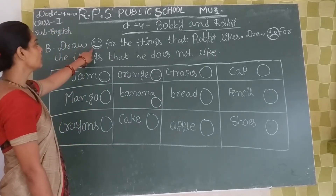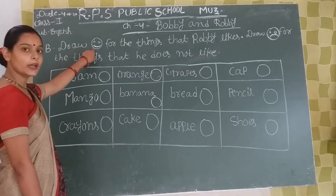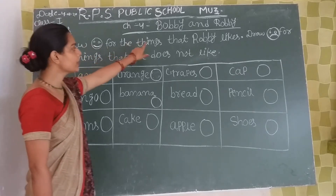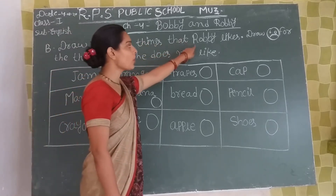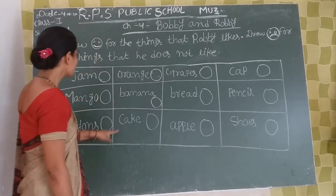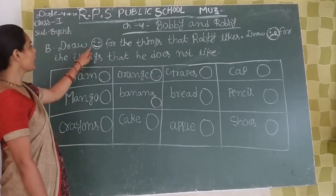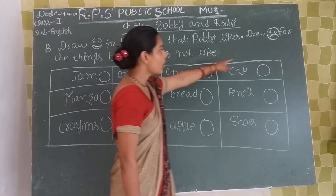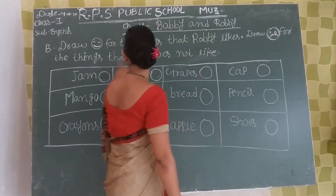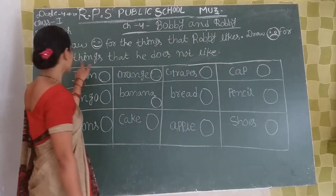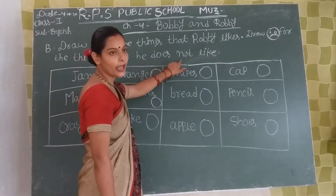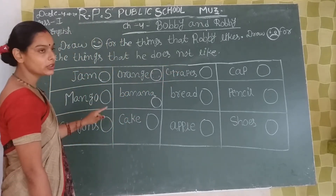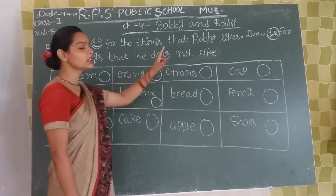Okay students, look at this — this is laughing mouth. Drop for the things that Robbie likes. And drop sad mouth for the things that he does not like — Robbie does things that he doesn't like, so this is what we call sad mouth.